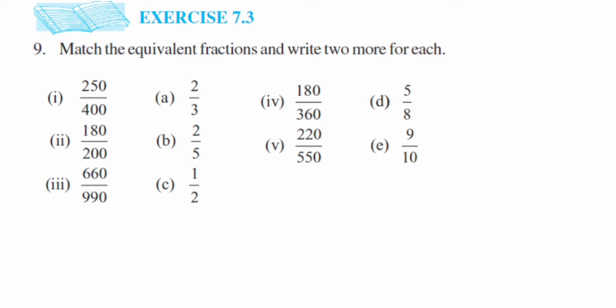They have given two columns — one with numbers 1, 2, 3 and another column with a, b, c. First we're going to reduce the numbers in column 1, 2, 3 to simplest form, and then we're going to find the equivalent fraction for each. The first number given is 250 upon 400.